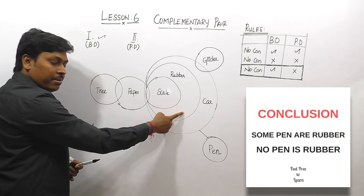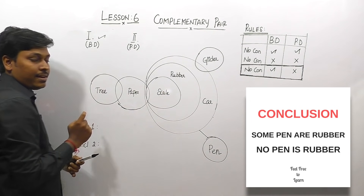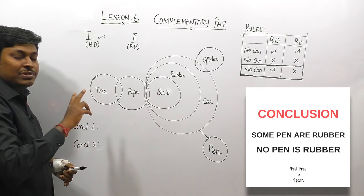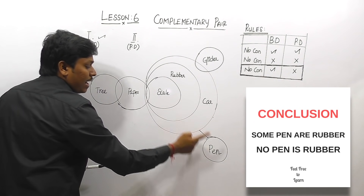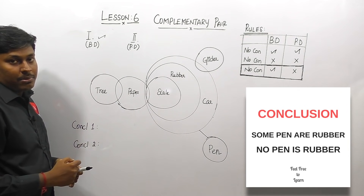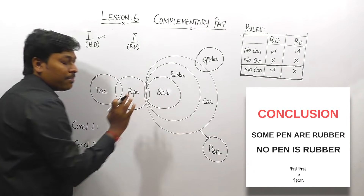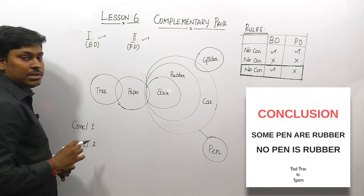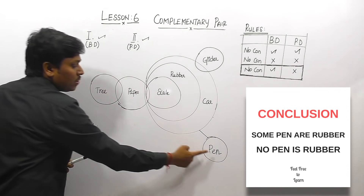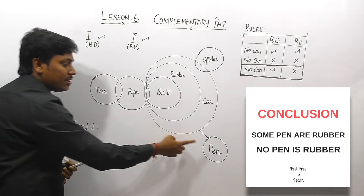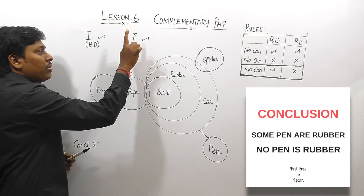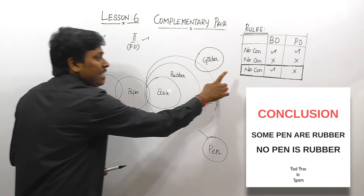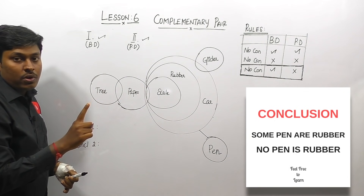If there is no connection between car and pen, we can clearly say there is no possibility of connecting pen with rubber, or pen with scale. There is a possibility of connecting pen with paper, pen with tree, and pen with glider — but no possibility of connecting pen with rubber, scale, or car. So in the possible diagram also, 'No pen is rubber' is true. Basic diagram: true. Possible diagram: true.